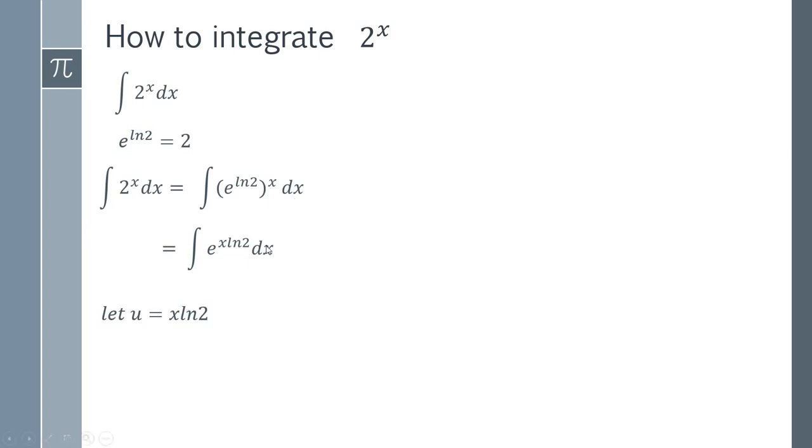We need to replace this dx with something in du to be able to do the integral. So we have to find the derivative. We find the derivative du/dx that gives us ln 2, and then we rearrange that to get dx equals du/ln2. We've now got everything we need to do the substitution.